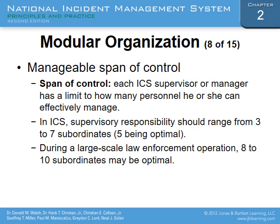Another key concept is Span of Control — the number of individuals one supervisor or manager can effectively manage. In ICS, the supervisor's responsibility should be between 3 and 7 subordinates, with 5 being optimal. During large-scale law enforcement operations, 8 to 10 may be an option. The most applicable and correct answer for testing purposes is 3 to 7 with 5 being optimal.